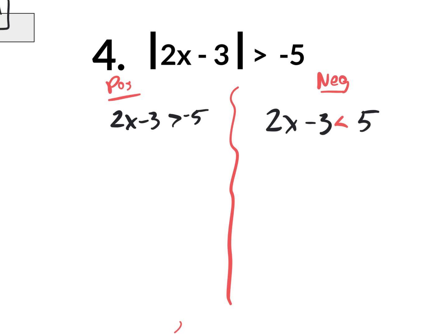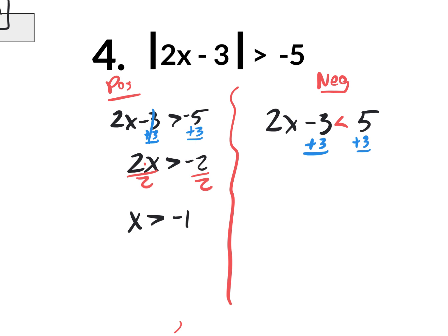Now we solve both. On the positive situation, get rid of the minus 3 first by adding 3 to both sides. I end up with 2x is greater than negative 2, which is really 2 times x greater than negative 2. To get rid of multiplication of 2, divide by 2 on both sides. We didn't divide by a negative, so keep the symbol — x is greater than negative 1. For the negative situation, begin by getting rid of that minus 3: plus 3 on both sides. New inequality: 2x less than 5 plus 3, which is 8. That's 2 times x less than 8. Divide by 2 on both sides — x is less than 4.